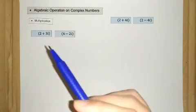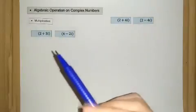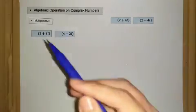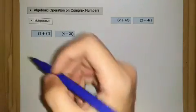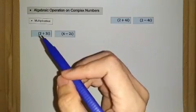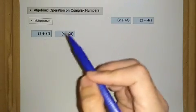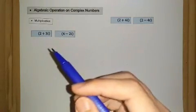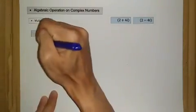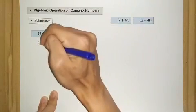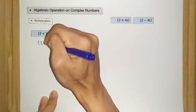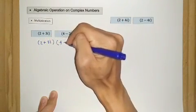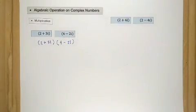Let's have a look at the first one. We have two complex numbers that we want to multiply together. We multiply each term from these two numbers respectively. So we have 2 plus 3i times 4 minus 2i.